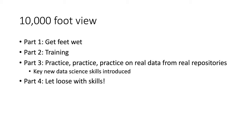The 10,000-foot view of the class is as four phases. First, the students get their feet wet with a straightforward but interesting module, followed by multiple weeks of training in data science with ecological applications. Then the students have multiple weeks of practice with real data, different kinds of datasets, and an introduction to key new data science concepts that builds on the multi-week training. Finally, the students are given more independence in analyzing a dataset where the process of analyzing isn't as laid out in the assignments.